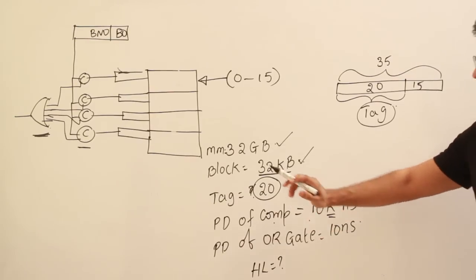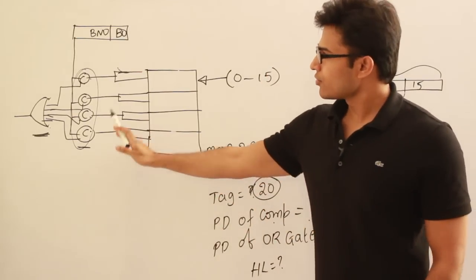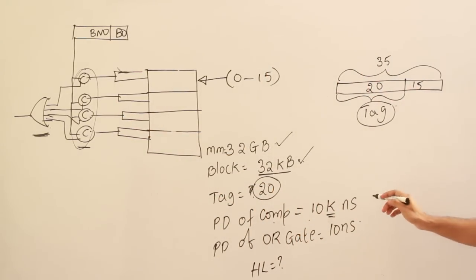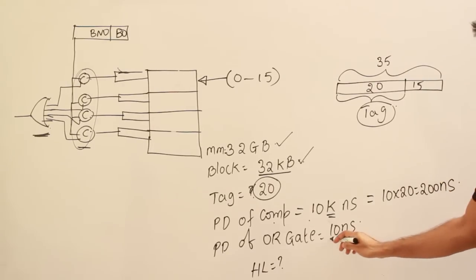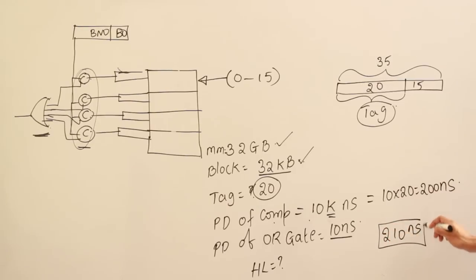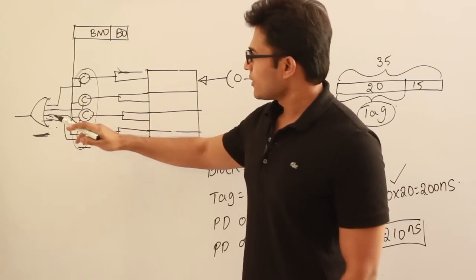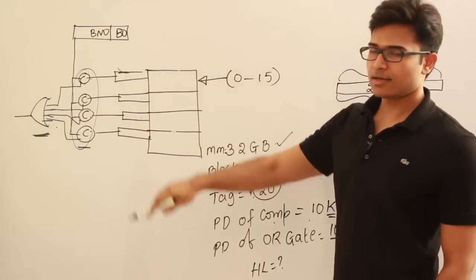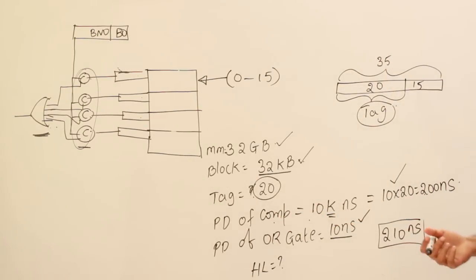Since all comparators operate in parallel, we only need to account for one comparator's delay. With K = 20 tag bits, comparator delay = 10 × 20 = 200 nanoseconds. OR gate delay = 10 nanoseconds. Therefore, hit latency = 200 + 10 = 210 nanoseconds. The OR gate is needed because we are testing whether the block is present in any of the cache lines simultaneously — not at one specific line.